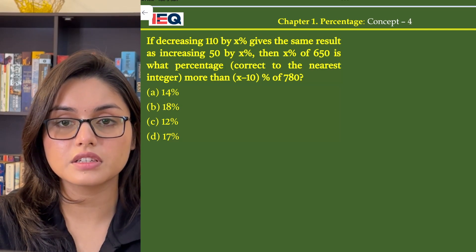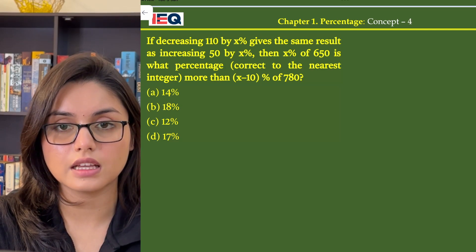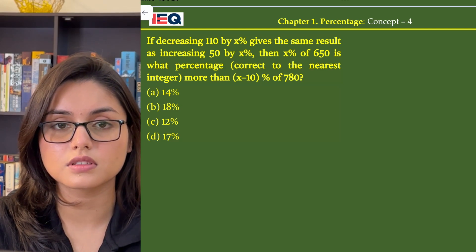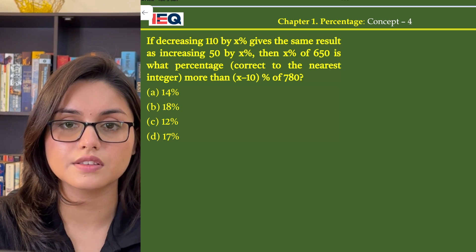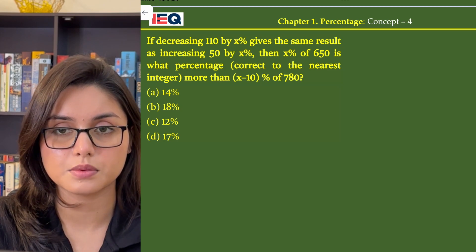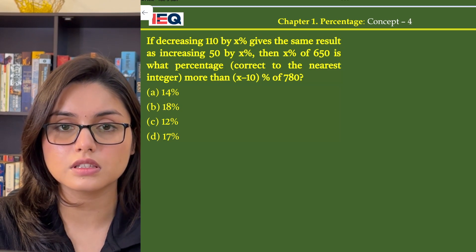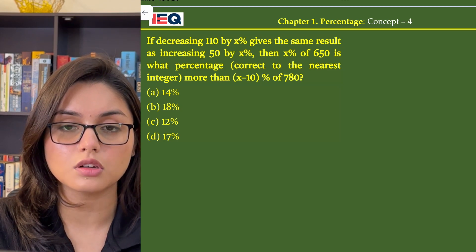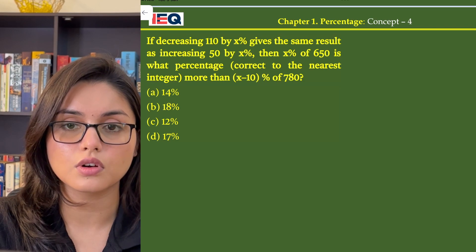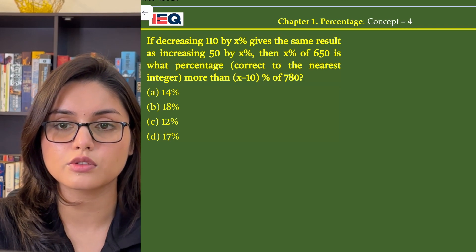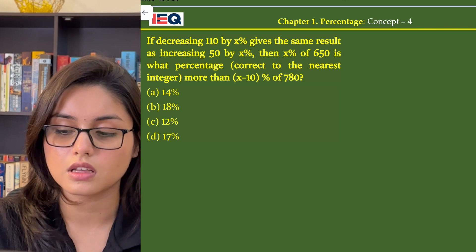If decreasing 110 by x% gives the same result as increasing 50 by x%, then x% of 650 is what percentage more than (x-10)% of 780?